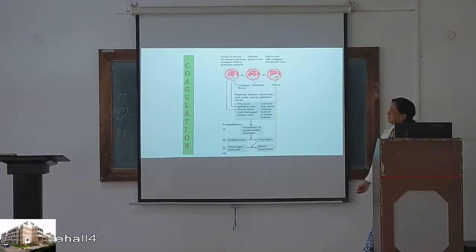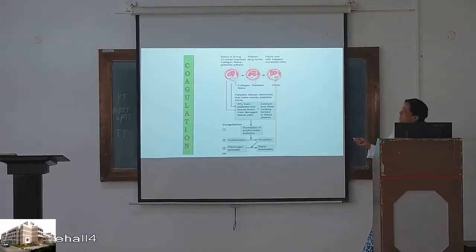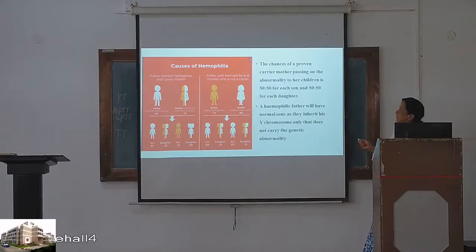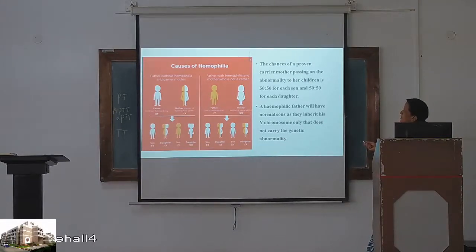The coagulation cascade — how blood clots. We are talking about hemophilia. The chance of a proven carrier mother passing on the abnormality to her children is 50-50. The gene is X-linked — the abnormal gene is in the female.